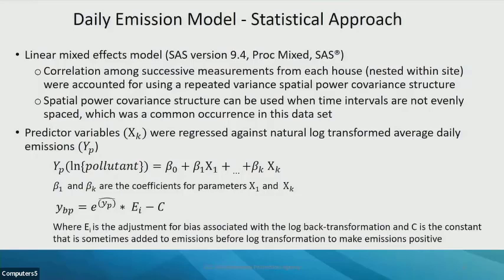The predictor variables were regressed against a natural log transformation of the emissions, with the coefficients — the betas — estimated for each predictor variable. Since the model predicts natural log emissions, the result must be back-transformed. When back-transforming, you also need to apply a bias adjustment associated with the log transformation. Additionally, when doing a log transformation, you need positive emission values, so if there were negative concentrations or emissions, a constant was added, which must then be subtracted back out.